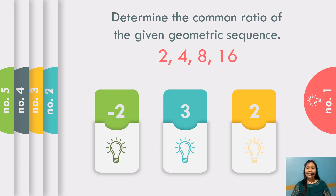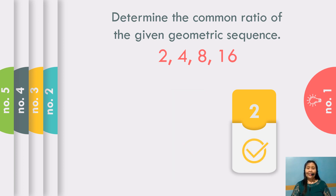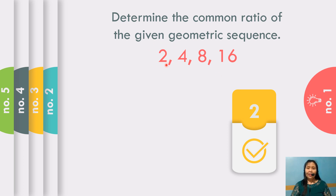Correct. The answer is equal to positive 2, because 4 divided by 2 is equal to 2. Or 8 divided by 4 is also equal to 2. 16 divided by 8 is also equal to 2.